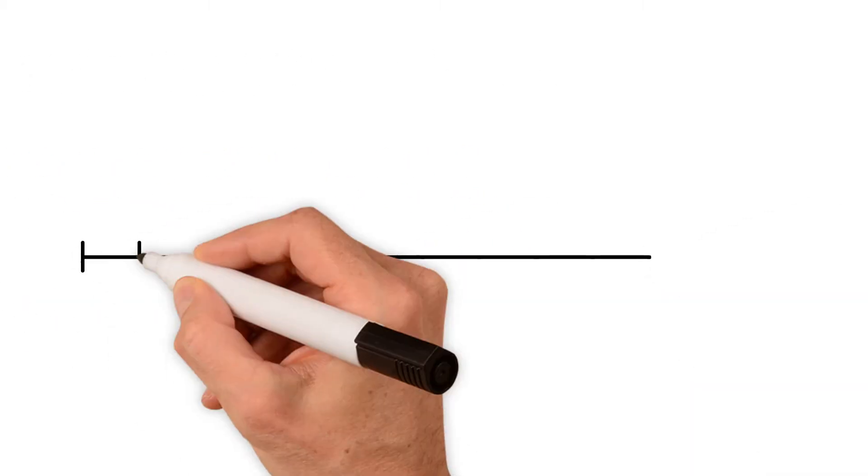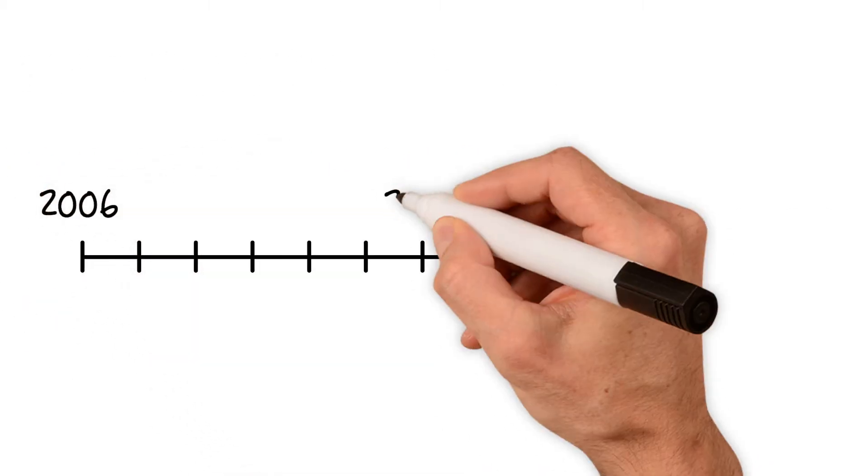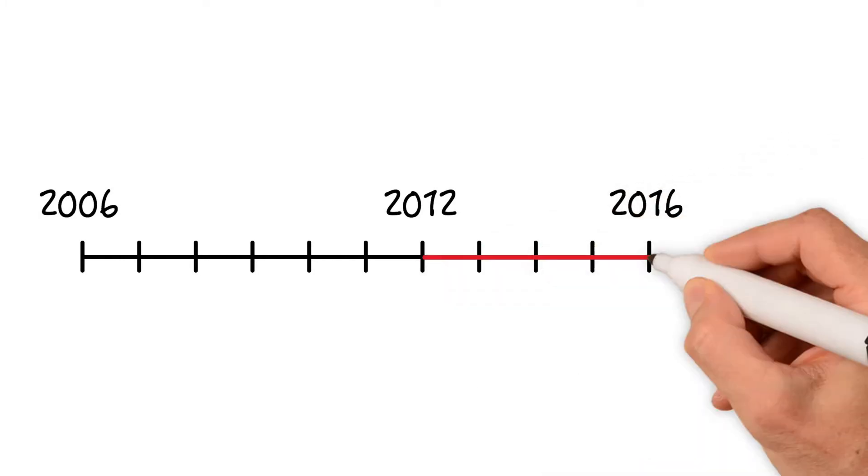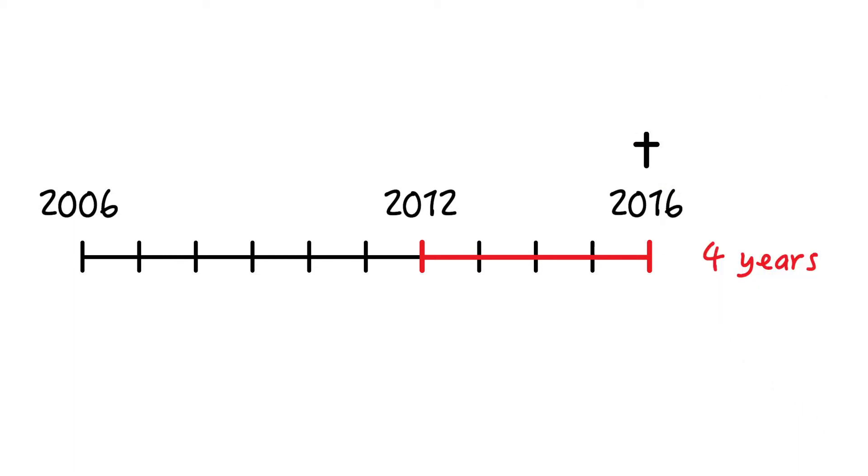Let's assume we have a patient in whom prostate cancer is diagnosed in 2012, and in 2016, after a disease duration of 4 years, he dies from it. So, with respect to 5-year survival, he would be calculated as a death.